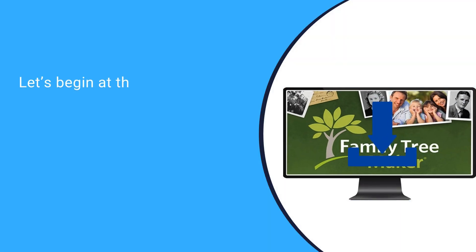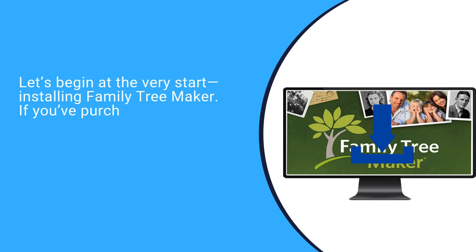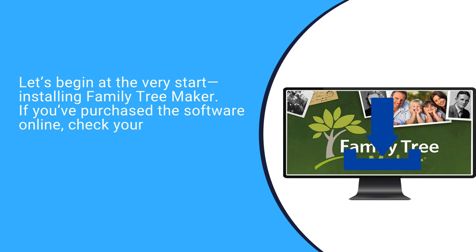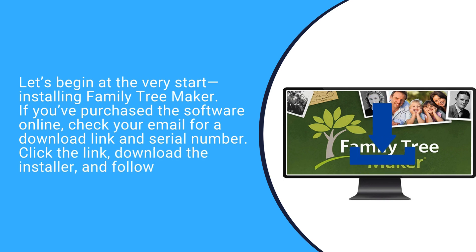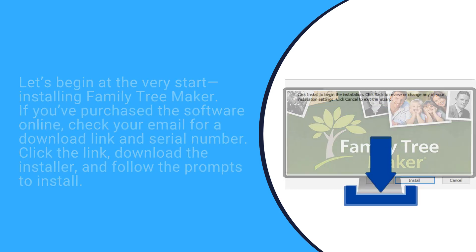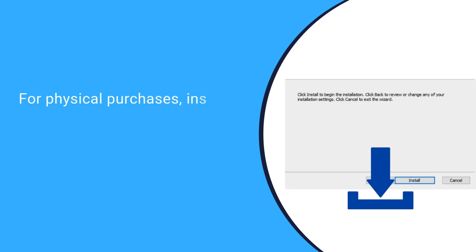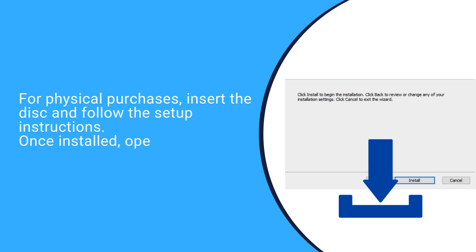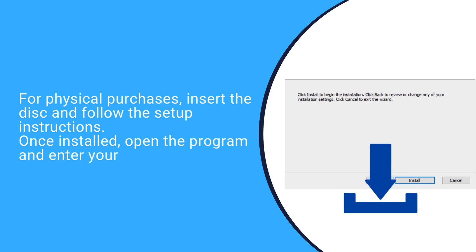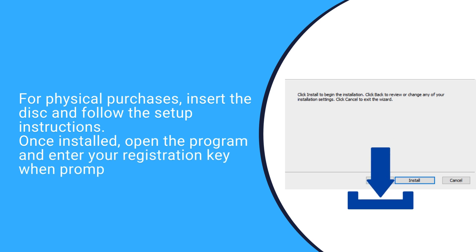Let's begin at the very start: installing Family Tree Maker. If you've purchased the software online, check your email for a download link and serial number. Click the link, download the installer, and follow the prompts to install. For physical purchases, insert the disk and follow the setup instructions. Once installed, open the program and enter your registration key when prompted.